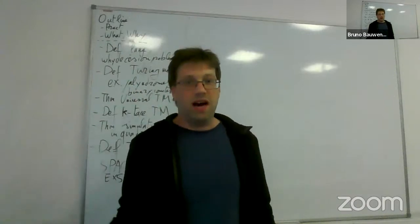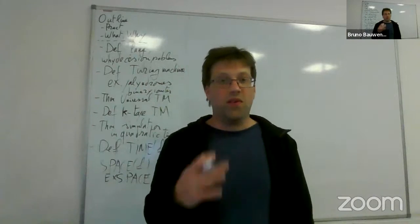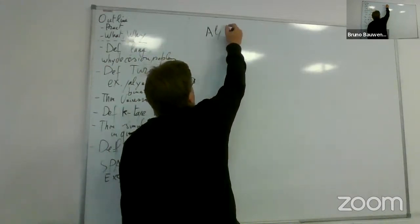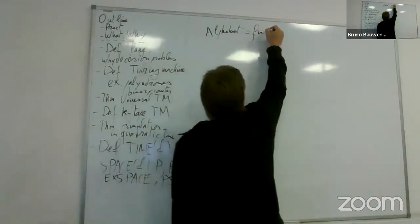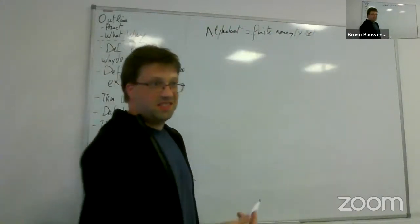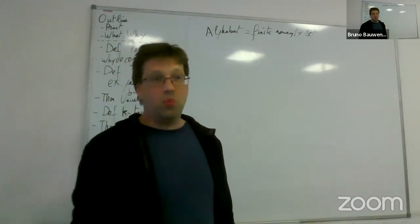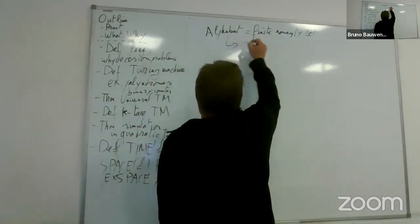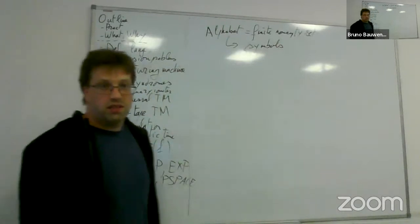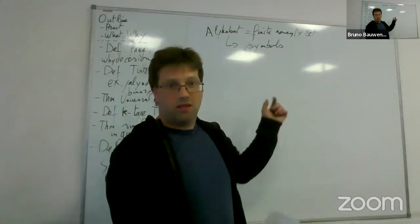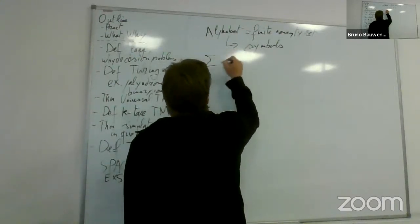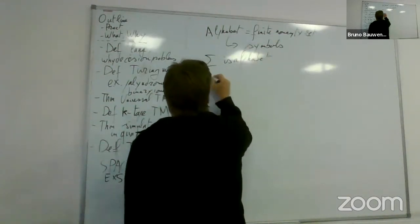We will focus on decision problems for languages. First we need to define an alphabet — that's just a finite set. The binary alphabet is a set with two elements, zero and one. A word is a finite list of symbols from the alphabet. Sigma-star is the set of all finite lists over alphabet sigma.